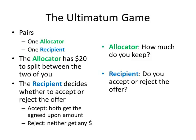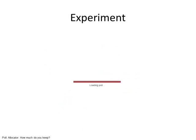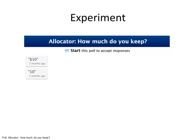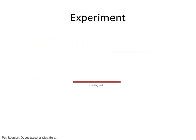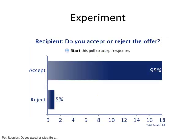I also used it for classroom experiments, such as the ultimatum game, where the class was split into pairs — one was the allocator and one was the recipient. I then had a poll for each: for the allocator I asked how much they kept, and for the recipient I asked if they accepted the offer or not, and then we talked about why or why not. This is a good way to do a quick experiment where the overall result matters more than the individual data, although you can still download individual data as well.